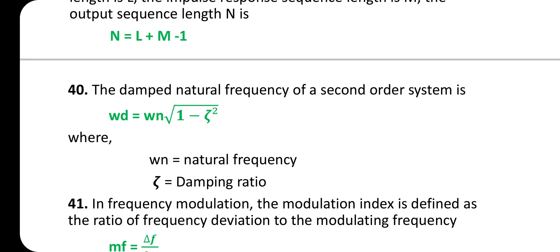The damped natural frequency of a second-order system is ω_d = ω_n × √(1 − η²), where ω_n is the natural frequency and η is the damping ratio.